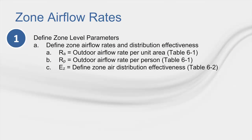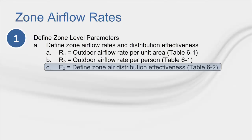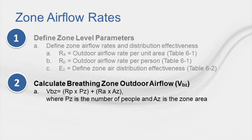The first step in the calculation is determining the zone level parameters for air flow rates and distribution effectiveness. Using Table 6-1 in the standard, you can determine R sub A, the outdoor air flow rate per unit area, and R sub P, the outdoor air flow rate per person in the zone. Additionally, Table 6-2 is used to determine the zone air distribution effectiveness. Using R sub A and R sub P from Table 6-1, you can calculate the breathing zone outdoor air flow, V sub BZ, using equation 6-1 from the standard.